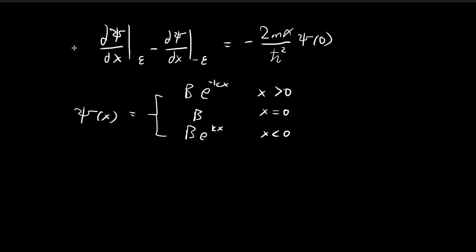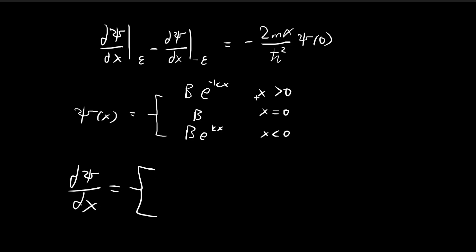So this is where we stopped last time in the previous video. We need to take the derivative of xi of x in order to continue with our proof. Taking the derivative, for the region where x is larger than 0, the derivative is just equal to negative k times b times e to the power of negative kx.